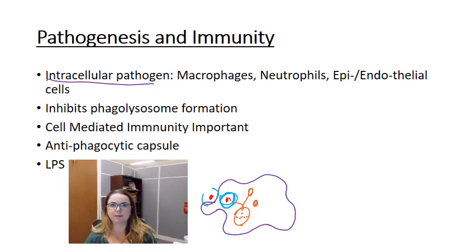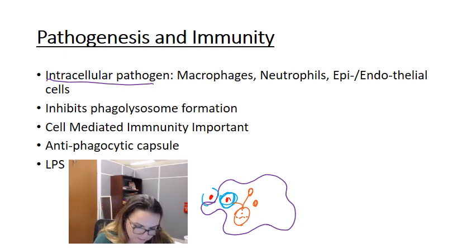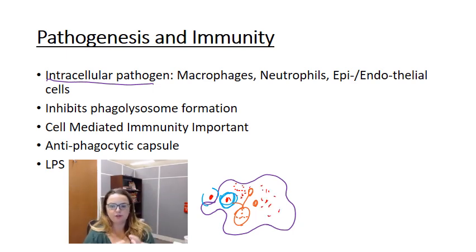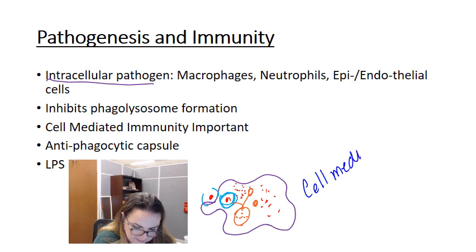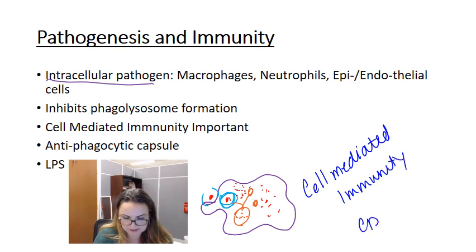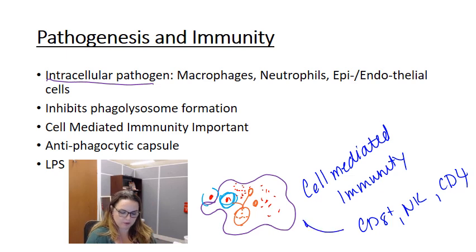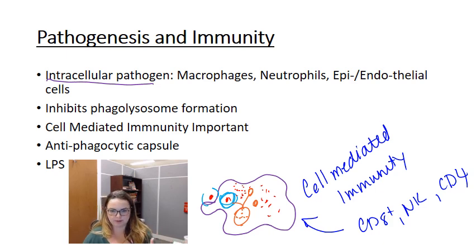The way it does this is it secretes proteins that facilitate bacterial escape from the phagosome. Instead of being destroyed, the organism breaks out and is able to replicate itself within the cytoplasm of the cell. The macrophage or neutrophil essentially becomes full of Francisella organisms. Like other intracellular pathogens, this means we're going to need a really strong cell-mediated immune response. When I say cell-mediated immunity, think CD8-positive T cells, NK cells, and Th1 CD4 helper cells — all important for fighting an intracellular pathogen. You also want a strong innate immune response like interferon gamma and TNF-alpha.